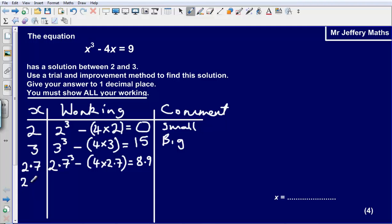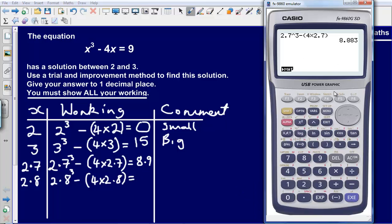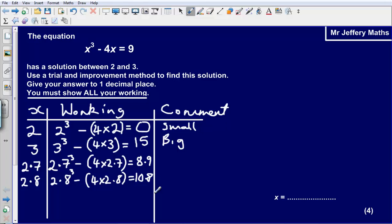Let's just check to see if 2.8 is too big or not. So we will substitute in 2.8 cubed minus 4 times 2.8 into our working box. That gives us an answer of 10.752. So we will just call that 10.8. So we forgot to make a comment here. We could say this is too small. This one here is too big.